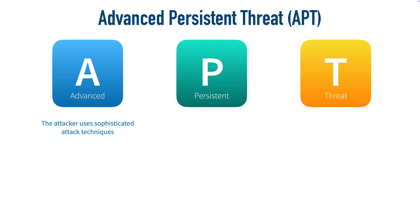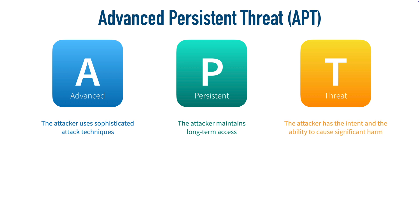The P, or Persistent, means that this is an ongoing, long-term attack, where an attacker might have a foothold within a network for maybe months or years. And T, or Threat, means that the attacker has the intent and the ability to cause significant harm to their target.